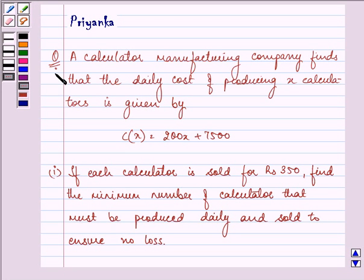Hello and how are you all today? The question says, a calculator manufacturing company finds that the daily cost of producing x calculators is given by C(x) = 200x + 7500.